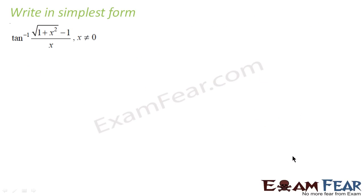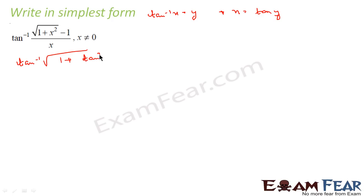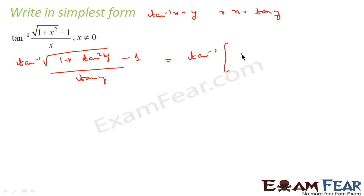Let's take one more example — we'll write this in the simplest form. Since we are not getting any direct clue, let's assume tan inverse x equals y, or x equals tan y. So let's take the LHS: tan inverse of root of (1 plus x squared) minus 1, divided by x. Since x equals tan y, 1 plus tan squared y is sec squared y, and the root of sec squared y is sec y. So this becomes tan inverse of (sec y minus 1) by tan y.